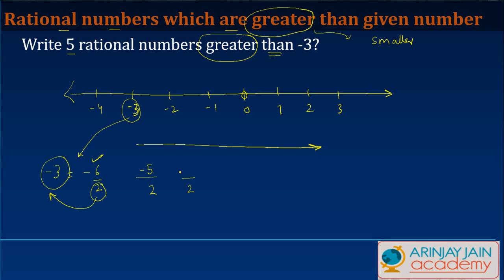So if I have -5/2, -4/2, -3/2, -2/2, or -1/2, all these numbers are going to be greater than -3.